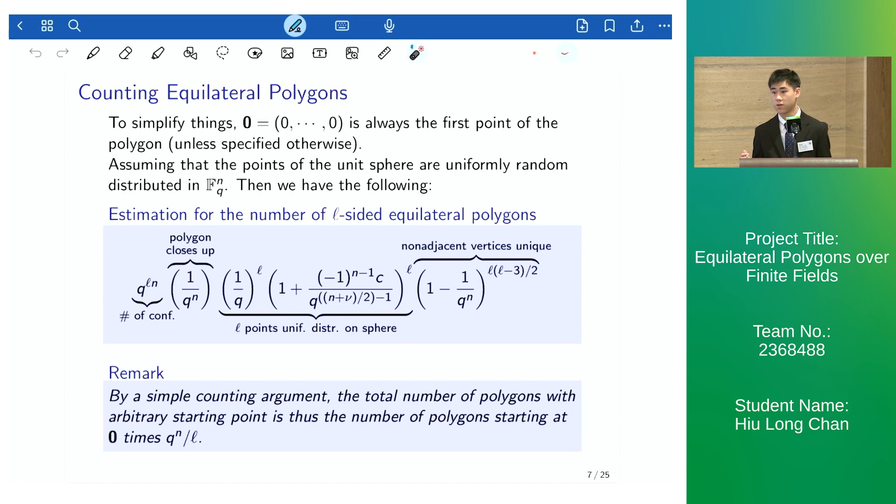To count the number of equilateral polygons, we always let the origin be the first point of the polygon. If we assume that the points of the u-sphere are uniformly randomly distributed, then we have this following estimate.